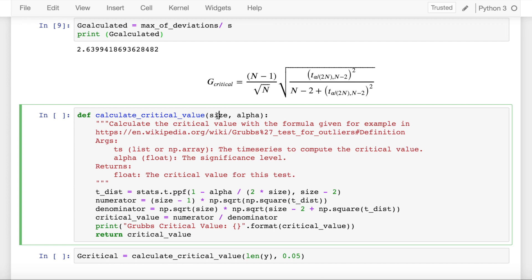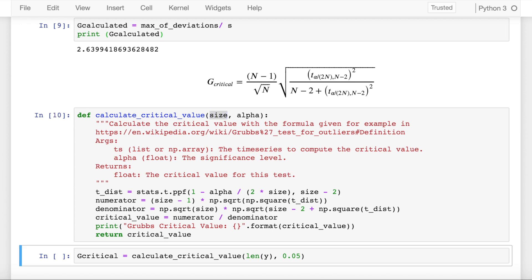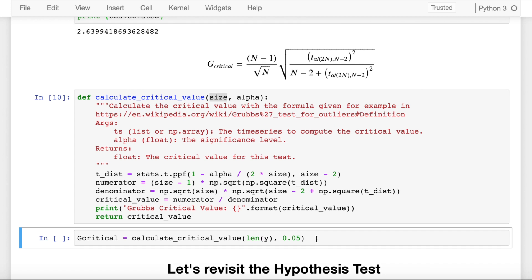The size that is the total number of elements that are present which is n in our case, and alpha that is 1 minus the confidence interval. So if my confidence interval that I am testing the test for is 95%, then my alpha value would be 0.05. So I run the cell and I calculate the critical value.